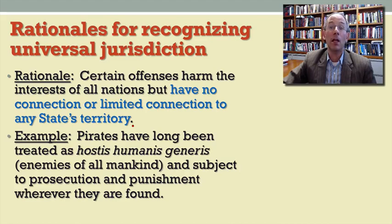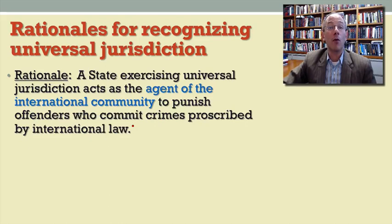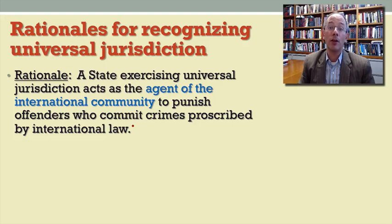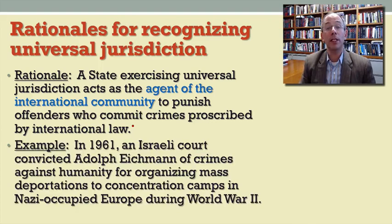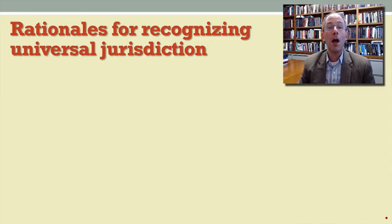Universal jurisdiction for piracy is alive and well in a number of countries. A second rationale is the idea that a state prosecuting an offender for a very serious crime under international law is acting as the agent of the international community — standing in the shoes of the international community and applying international law to carry out its policies and interests. The canonical example was the prosecution in the early 1960s of high-level Nazi official Adolf Eichmann, who was prosecuted in Israel for crimes against humanity relating to deporting civilians to concentration camps and death camps during World War II.